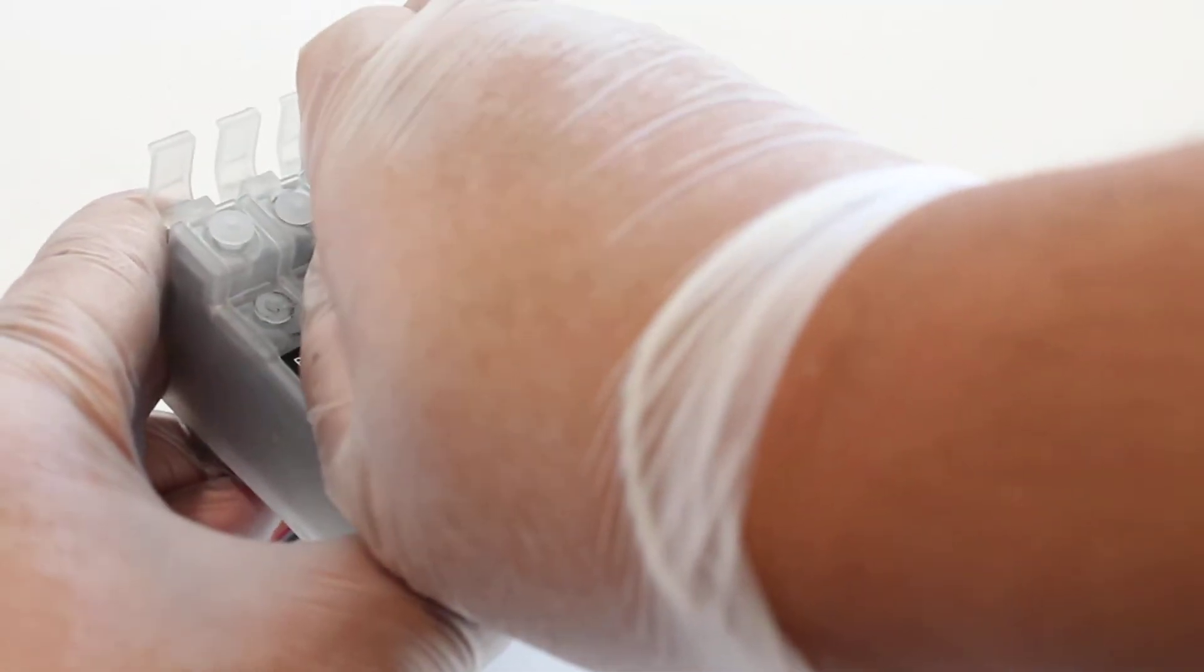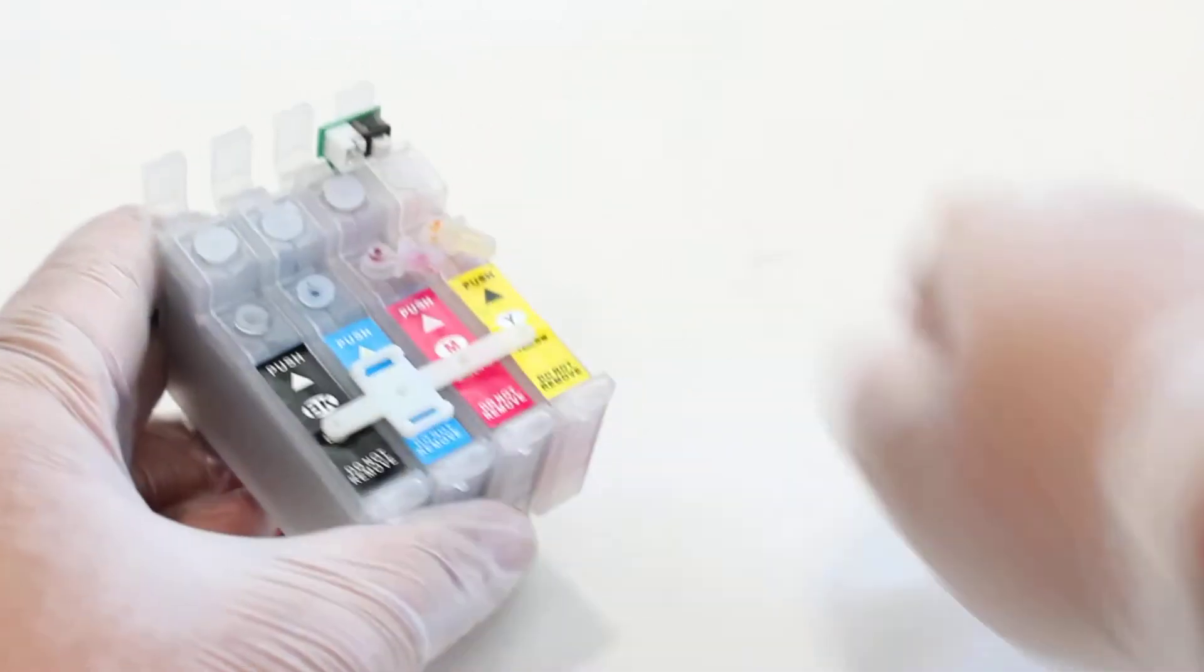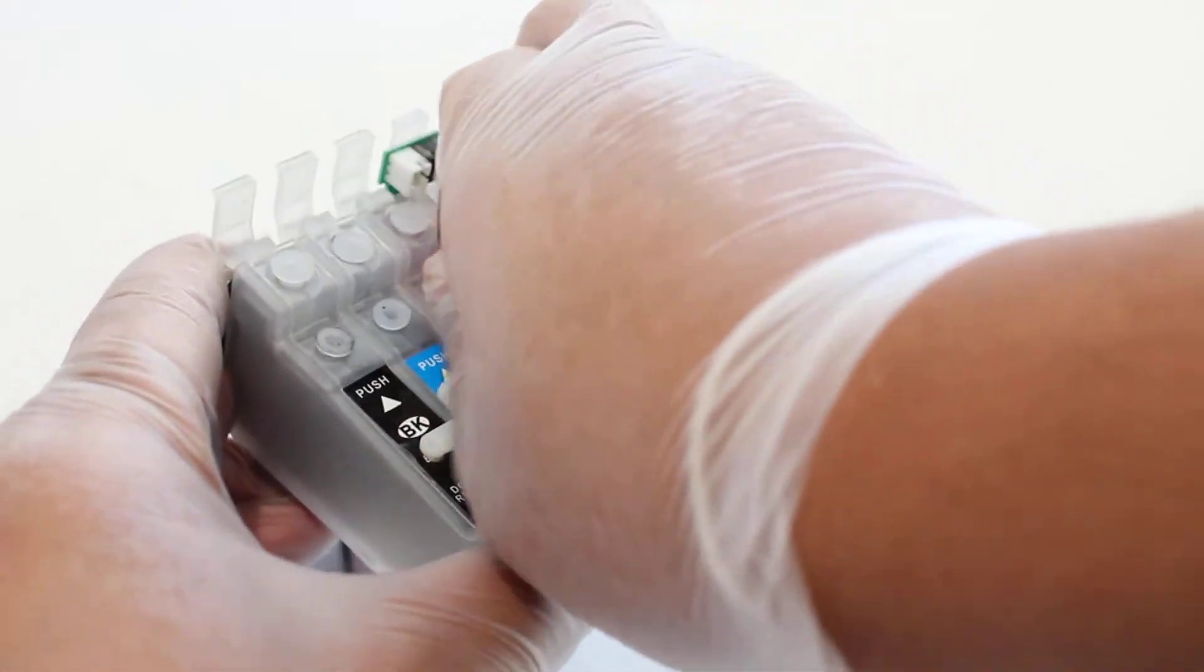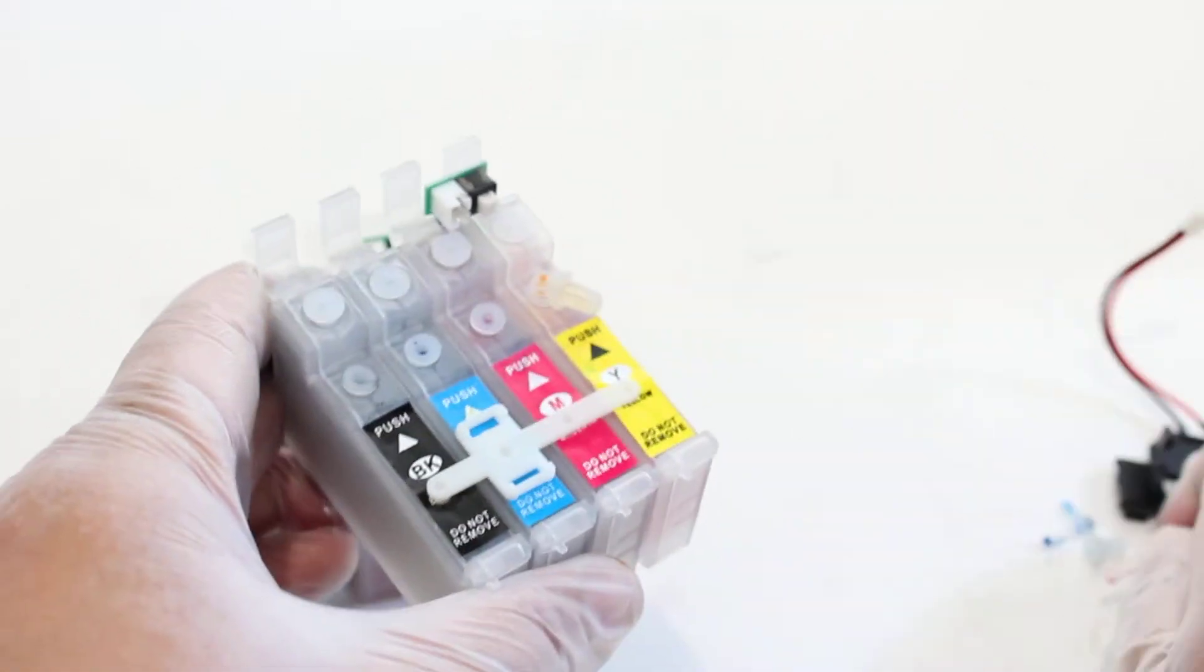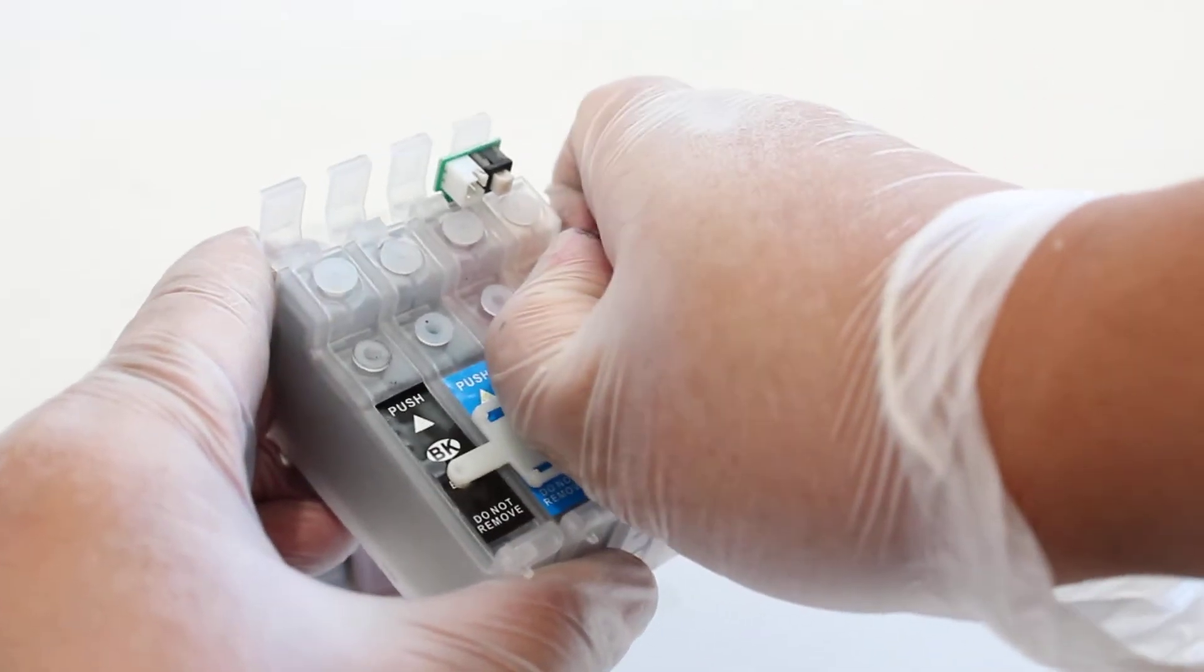So the easiest way is to remove each elbow with the stopper and I'll do it for each color. Magenta, last one yellow.